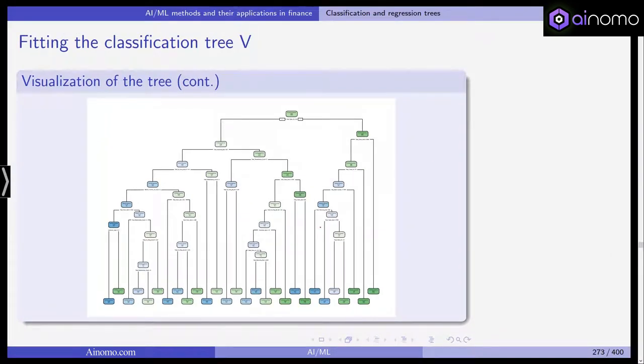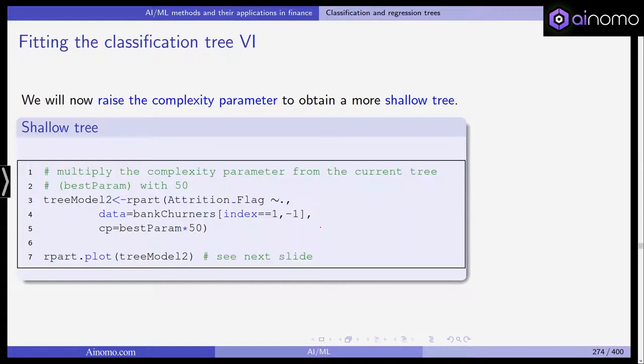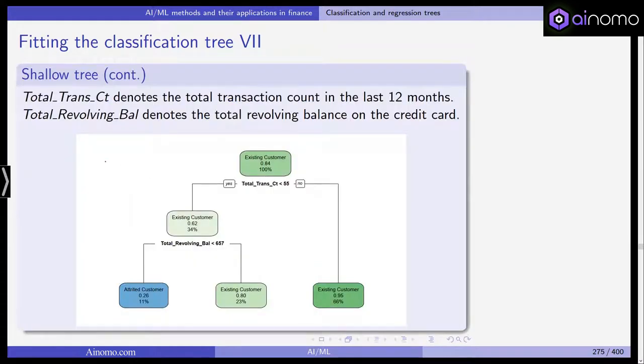If you zoom in or do it at home with the same code, you get this tree. As one can see, this is actually quite deep. Now we will raise the complexity parameter to obtain a more shallow tree. We multiply the complexity parameter from the current tree with 50 and do the same again. On the next slide you can see total transaction count and the total revolving balance on the credit card.